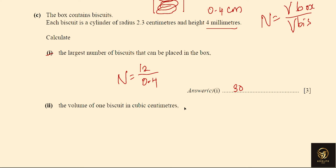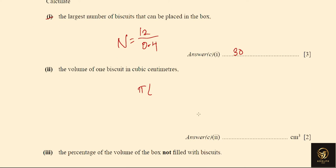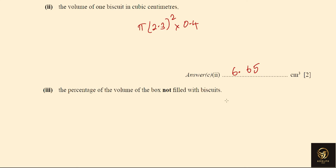Next, find the volume of one biscuit. It is cylinder-shaped, so volume = π × r² × h = π × 2.3² × 0.4. This gives 6.65 cm³ to three significant figures as the volume of one biscuit.